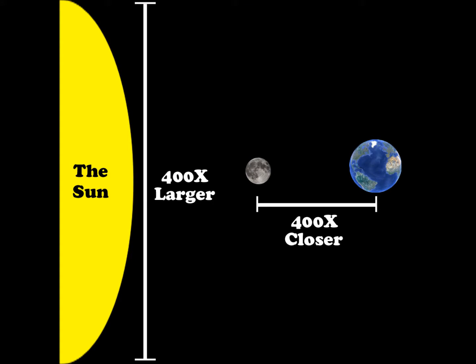Now we have two answers of the same value, 400. So we can say that the diameter of the Sun, or the side we can see, is 400 times larger than that of the Moon. However, the Moon is 400 times closer to the Earth than the Sun is.